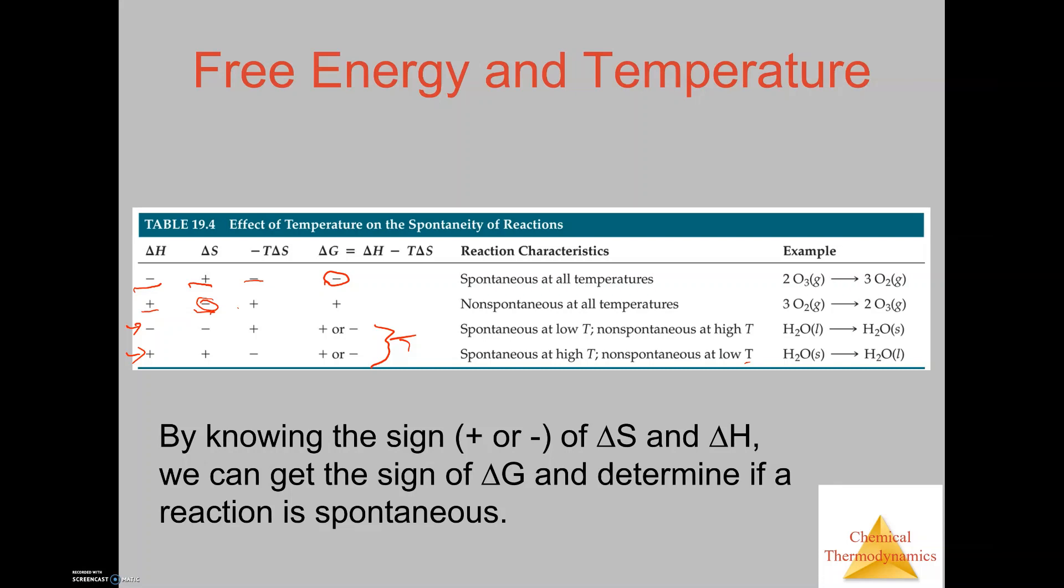This is just a table that kind of summarizes that. By knowing the sign positive and negative for Delta S and Delta H, we can get the sign of Delta G and determine if a reaction is spontaneous or not. This is just more like a theoretical thing, but the best way of doing it is to actually go through the calculation. Calculate Delta H and Delta S from the values you find in your appendix, then plug those values in to solve for Delta G. If Delta G is negative, there's no question about it.